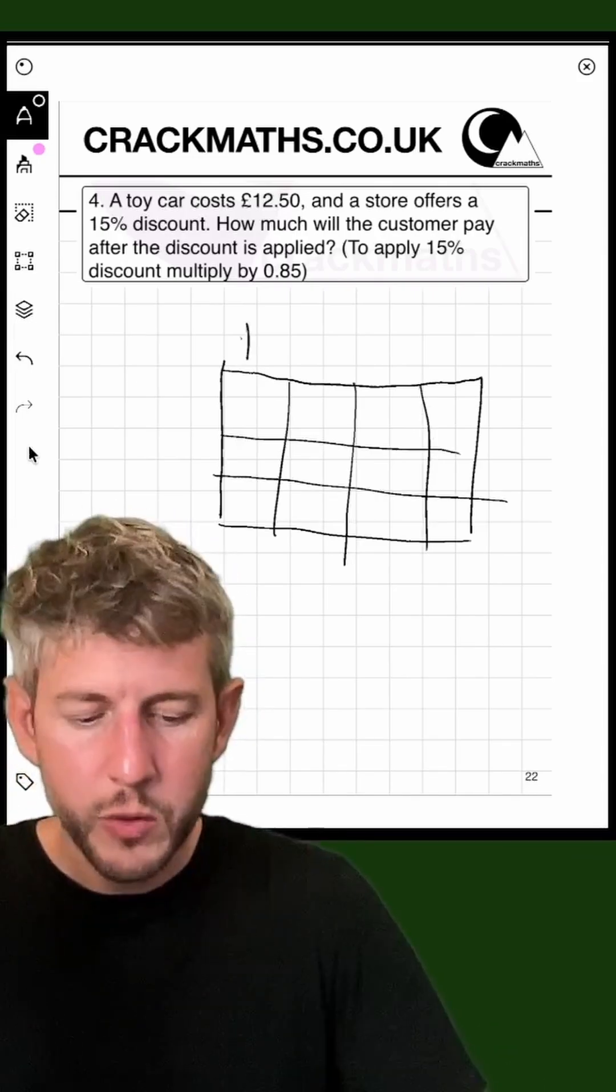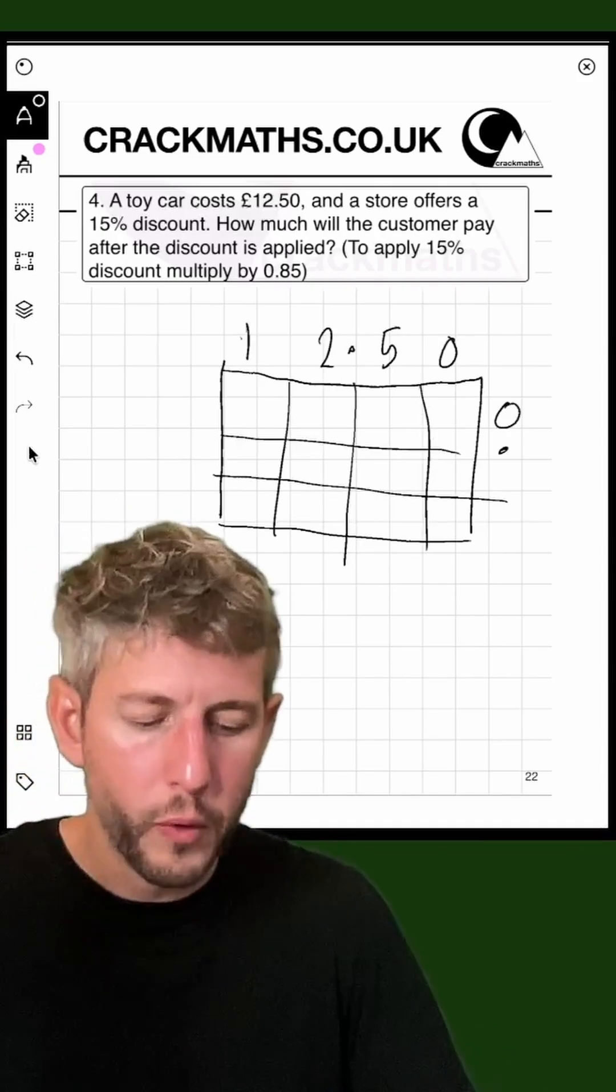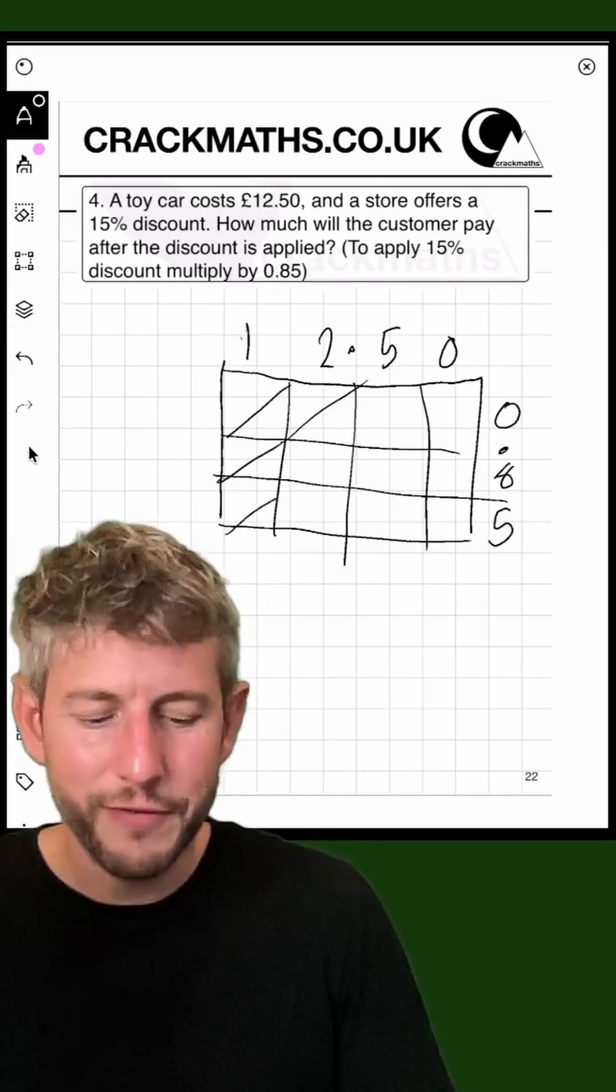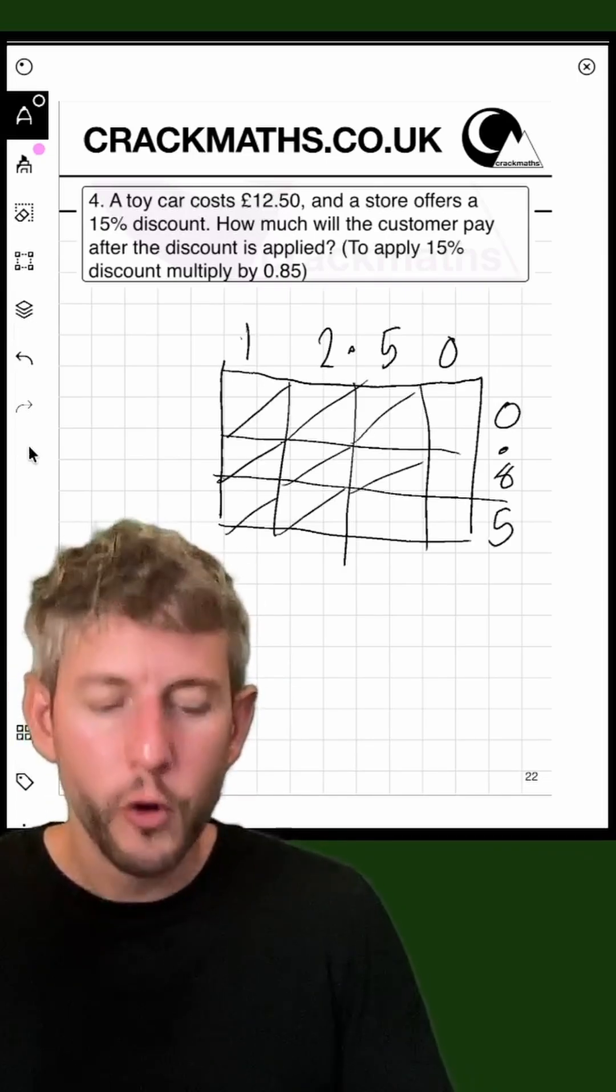Next, I'm going to add my numbers. £12.50 here and 0.85. The next thing is to just divide all of these squares into two before our multiplication.